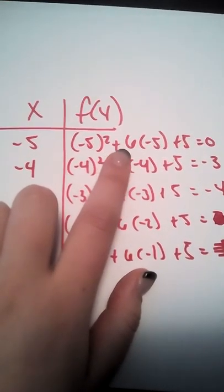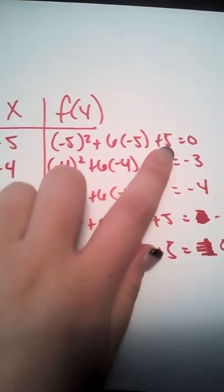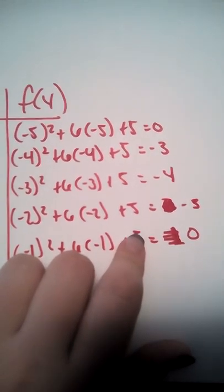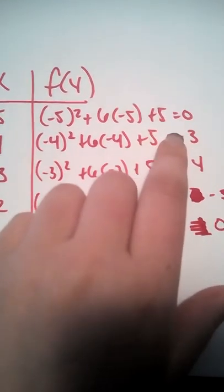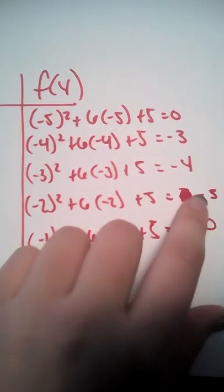Negative 5 squared plus 6 times negative 5 plus 5, which equals 0. And as you can tell, there is a pattern. This one also equals 0. And this one also equals negative 3.